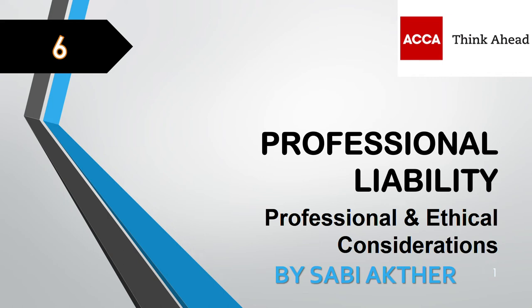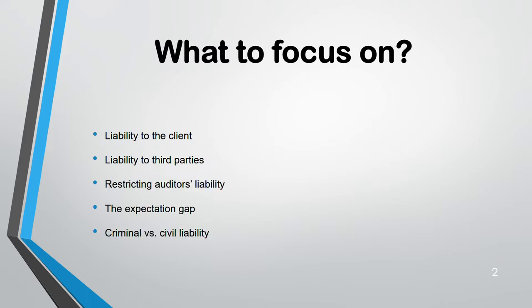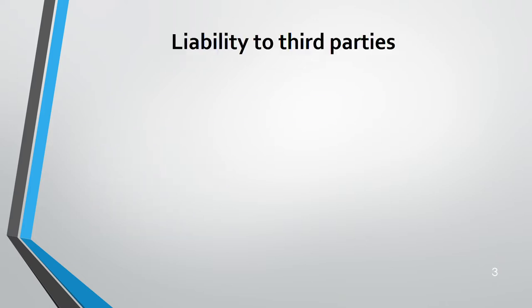Welcome to Lecture 6, covering Section B on professional and ethical considerations. Today's topic is professional liability. Lecture 7 will cover quality management, which is Section C of the AAA syllabus. Here we will focus on liability to the client, liability to third parties, restricting the auditor's liability, the expectation gap, and criminal versus civil liability.